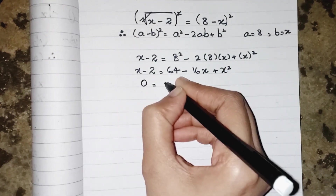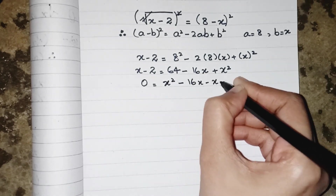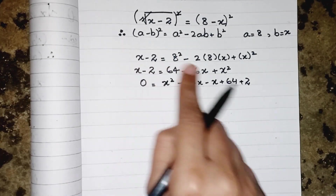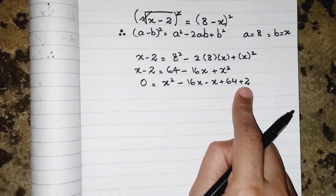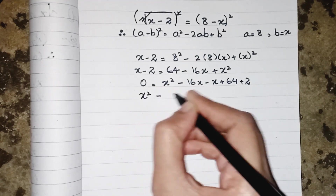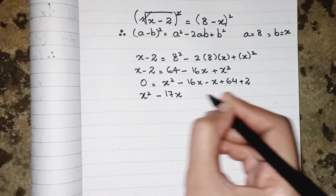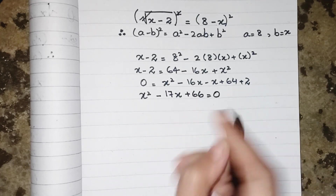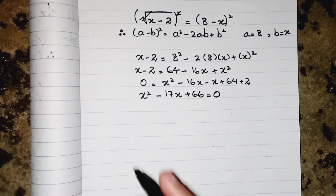Now we rearrange the equation: 0 equals x squared minus 16x minus x plus 64 plus 2. When the x moves to the other side it becomes minus, and minus 2 moves over with a plus sign. So the equation becomes x squared minus 17x plus 66 equals 0.